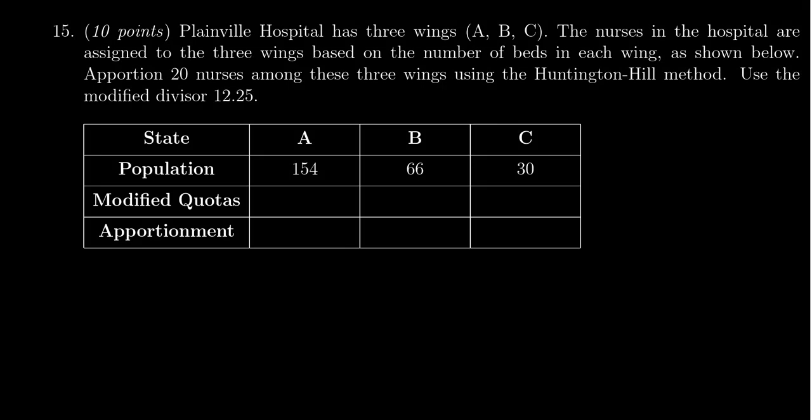In this video we provide the solution to question number 15 for practice exam 3 for math 1030, in which case we have to apportion 20 seats among three states A, B, C using the Huntington Hill method.